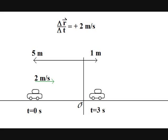This change occurred over three seconds, so the average rate of change of position with respect to time for this interval was two meters per second to the right. Notice that this quantity has a magnitude, two meters per second, and a direction to the right.